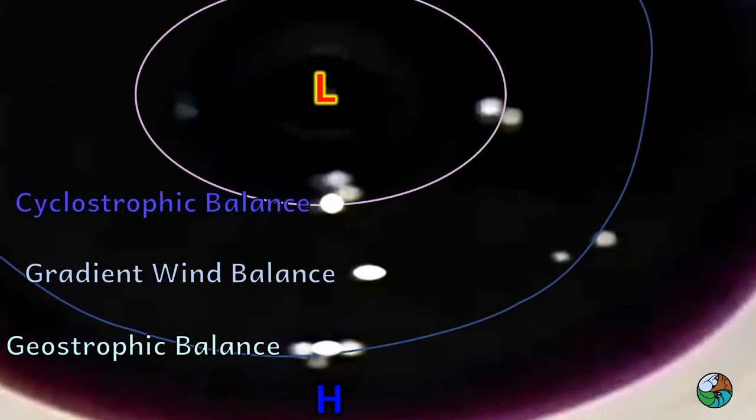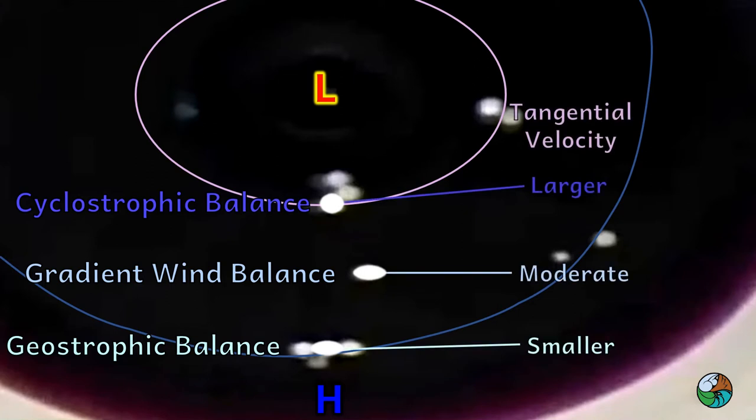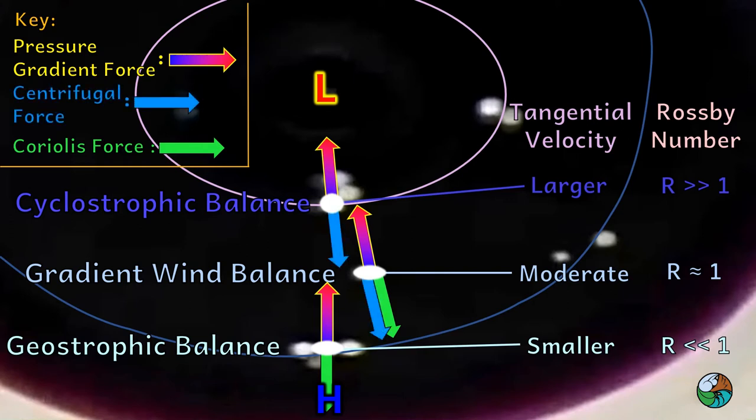In conclusion, when the air parcel is closer to the center of the vortex, the tangential velocity is larger. The Rossby number is also larger when the air parcel is closer to the center. Pressure gradient force balances with the Coriolis force away from the center and the centrifugal force near the center.